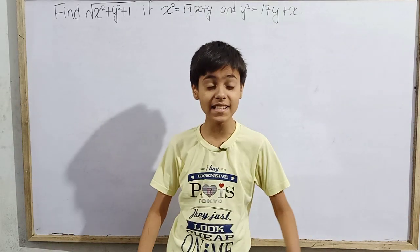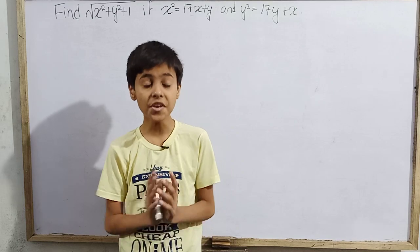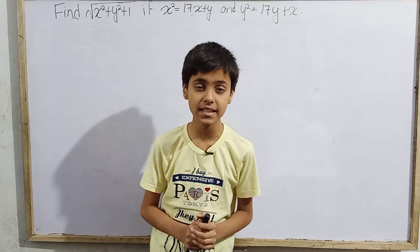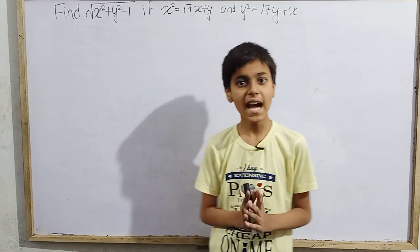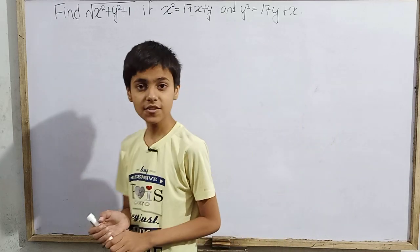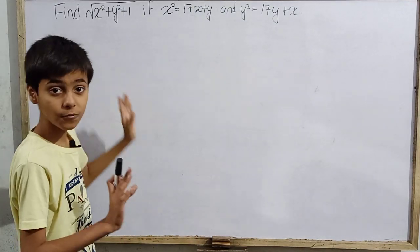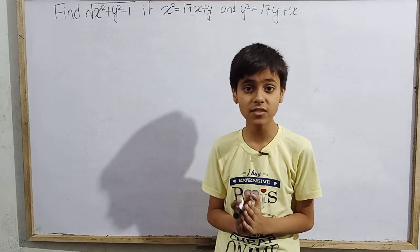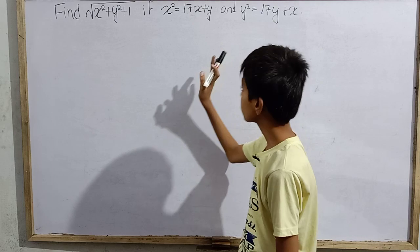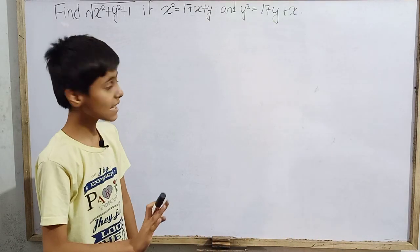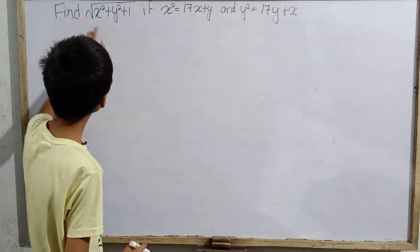Hello everyone and welcome back to SK Monikis. We are back with a new question from mathematics. Today's question was requested from my comment section on YouTube by Rahul Knowledge Bhai. We are going to find the value of the square root of x² + y² + 1, given that x² = 17x + y and y² = 17y + x.